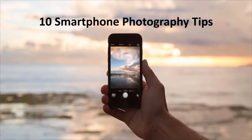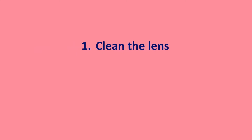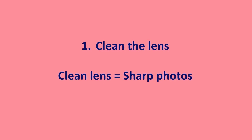We're all photographers now — we've all got a smartphone. Here are ten tips to help improve the quality of your photographs. Firstly, clean the lens. You probably know this: it's dirty all the time, isn't it? It's in your pocket. Just take it out regularly and give it a clean with a little bit of a clean cloth. I usually use my t-shirt. Clean lens equals sharp photos, no blurriness.